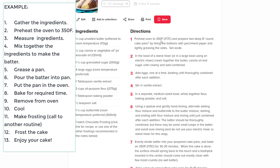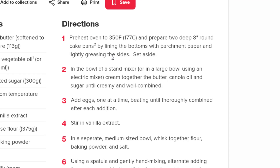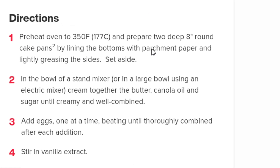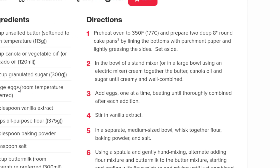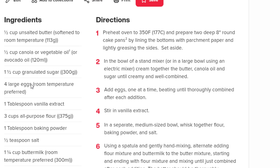Preheat the oven to 350 degrees, prepare two eight-inch round cake pans, line the bottoms with parchment paper, and lightly grease the sides, then set aside. All of those we could write out as an algorithm — those are all instructions. But there are a few instructions the recipe is taking for granted.